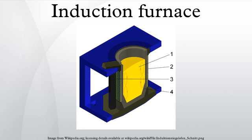An induction furnace consists of a non-conductive crucible holding the charge of metal to be melted, surrounded by a coil of copper wire. A powerful alternating current flows through the wire. The coil creates a rapidly reversing magnetic field that penetrates the metal. The magnetic field induces eddy currents, circular electric currents, inside the metal, by electromagnetic induction.